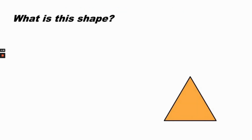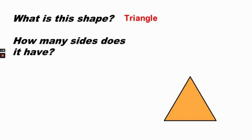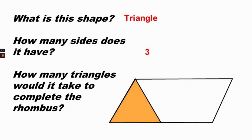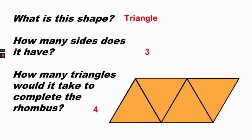What is this shape? A triangle. How many sides does a triangle have? Three. How many triangles would it take to complete the rhombus? It would take four triangles to complete the rhombus.